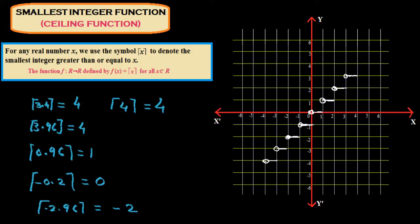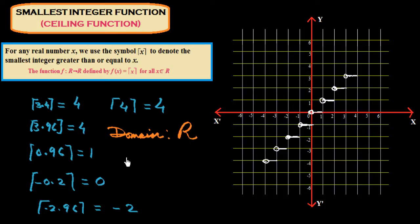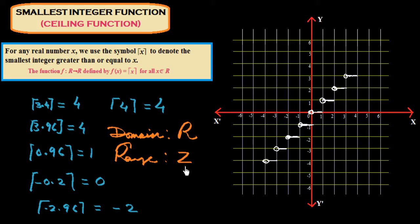Now we find the domain and range of the ceiling function. The domain is R, because we can put any number — decimal or integer — in place of x. For the range, we are getting only integers here as well, just as with the greatest integer function. So the range is Z, the set of all integers. This is the smallest integer function, also called the ceiling function.